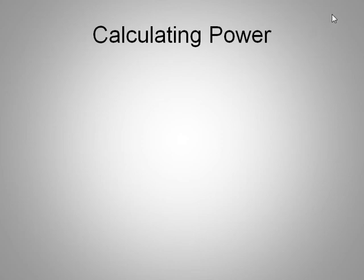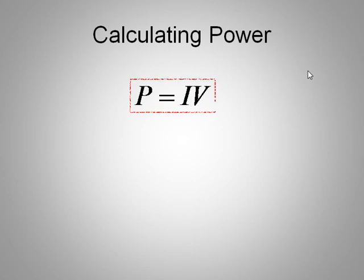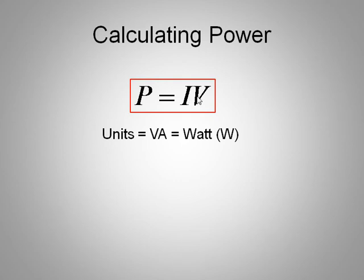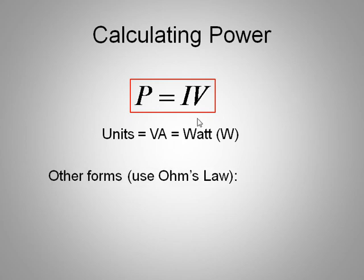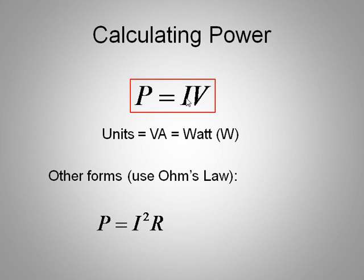So how do you go about calculating power? If we're going to make a design for a circuit that's safe and long-lived, we want to be able to calculate the power. Power equals current times voltage — and that deserves a box. The units of power: current is amps, voltage is volts, so amp-volt (or volt-amp as it's usually called) is also called a Watt, named after James Watt. There are other forms of this equation if you employ Ohm's Law. Since V equals IR, if we replace V with IR we get I squared R. Or if we replace I with V over R, we get V squared over R. These are all equivalent — just other convenient forms of the same equation.